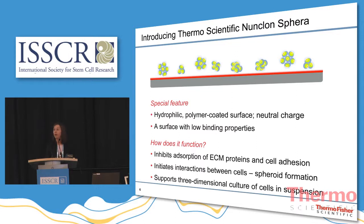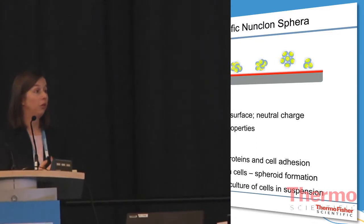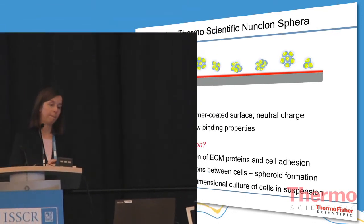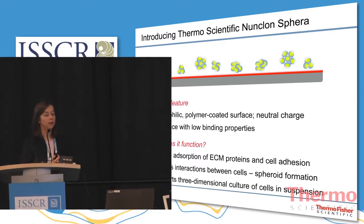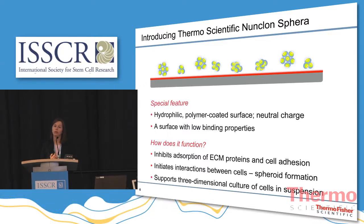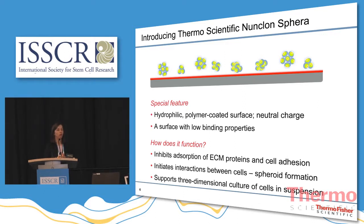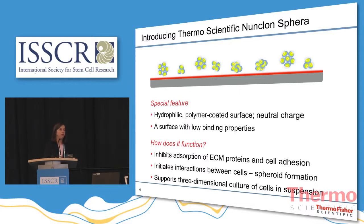Thermo Fisher Scientific now offers an exciting new product, specifically developed to support the three-dimensional culture of cell spheroids: Thermo Scientific Nunclone Sphere. The special feature of Nunclone Sphere is its hydrophilic polymer-coated surface, which has a neutral charge. It is the combination of the polymer's hydrophilicity and neutral charge which gives Nunclone Sphere its low binding properties. As a result, ionic and hydrophobic interactions are prevented from occurring — the two main factors which facilitate the absorption of extracellular matrix proteins and cell attachment. By inhibiting cell attachment altogether, the Nunclone Sphere surface initiates the interaction between the cells, ultimately resulting in spheroid formation.